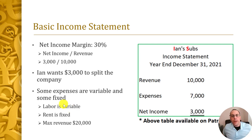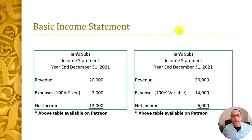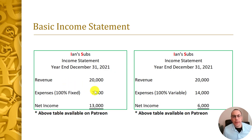You ask Ian what the maximum revenue he could generate in his current space would be — roughly $20,000 next year. You create a chart to show why variable and fixed costs matter. In the extreme case where 100% of expenses are fixed (pretend rent costs $7,000 and there are no variable costs), if revenue grew to $20,000, net income would be $13,000, and you'd each split $6,500.